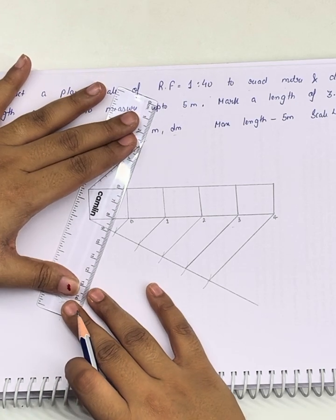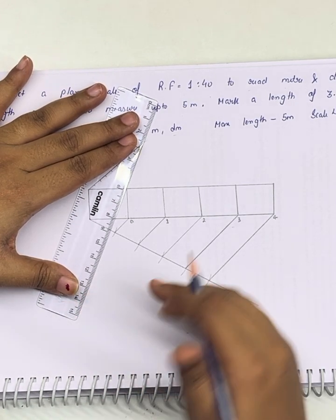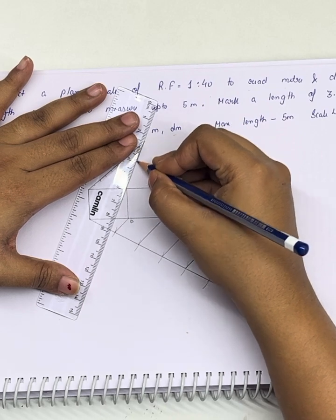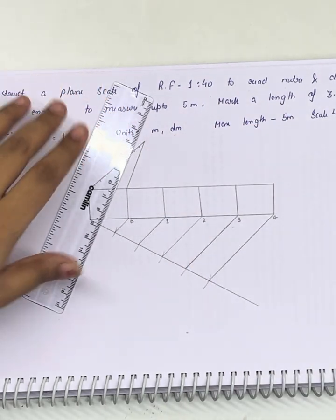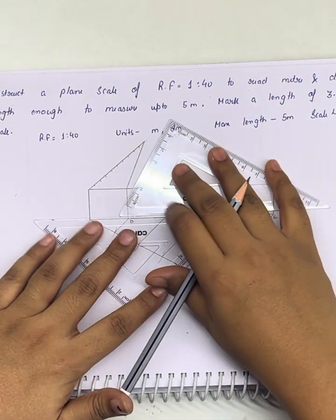We will be joining this end to the other end now. Now we will be drawing lines parallel, so we are going to use the set square for this again.